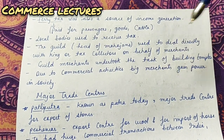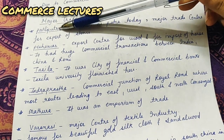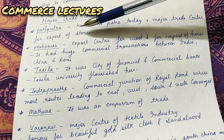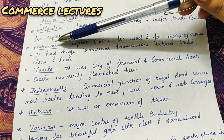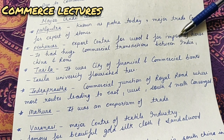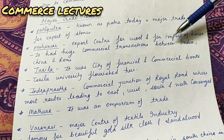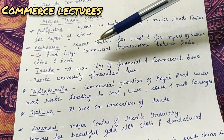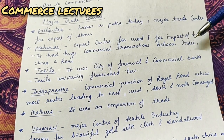Let us look at the major trade centers of that time. Patliputra, which is today called Patna, was a major trade center for export of stones. Export means sending goods from your own country to another place, and import means bringing goods from another country into your own country. Patliputra had huge commercial transactions between India, China, and Rome.